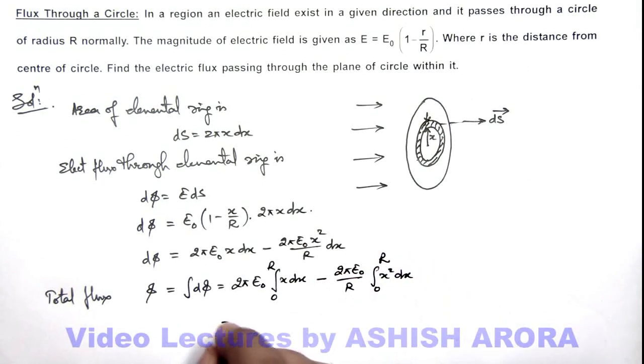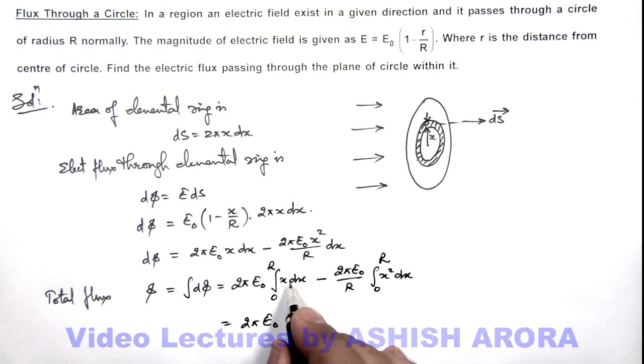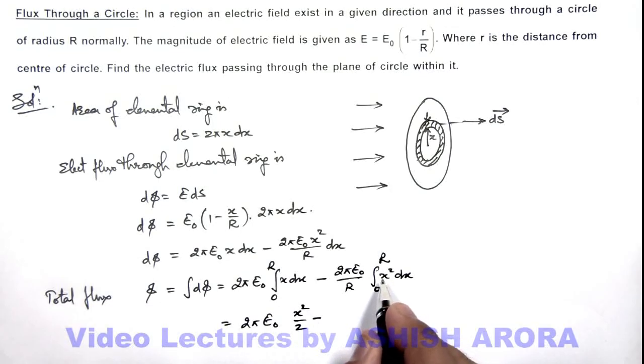If we integrate this expression we are getting 2πE₀[x²/2 - x³/3R].